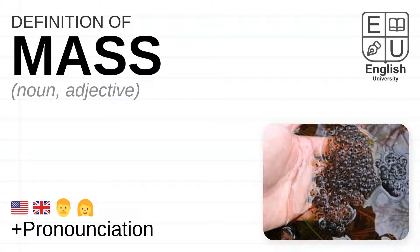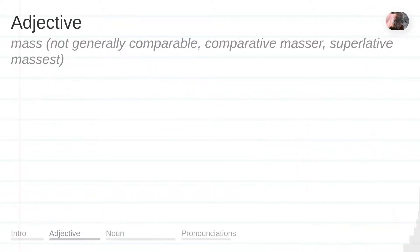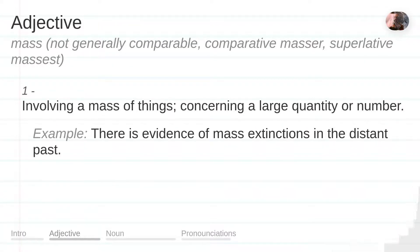Definition of the word mass. Adjective: involving a mass of things, concerning a large quantity or number. Example: There is evidence of mass extinctions in the distant past.